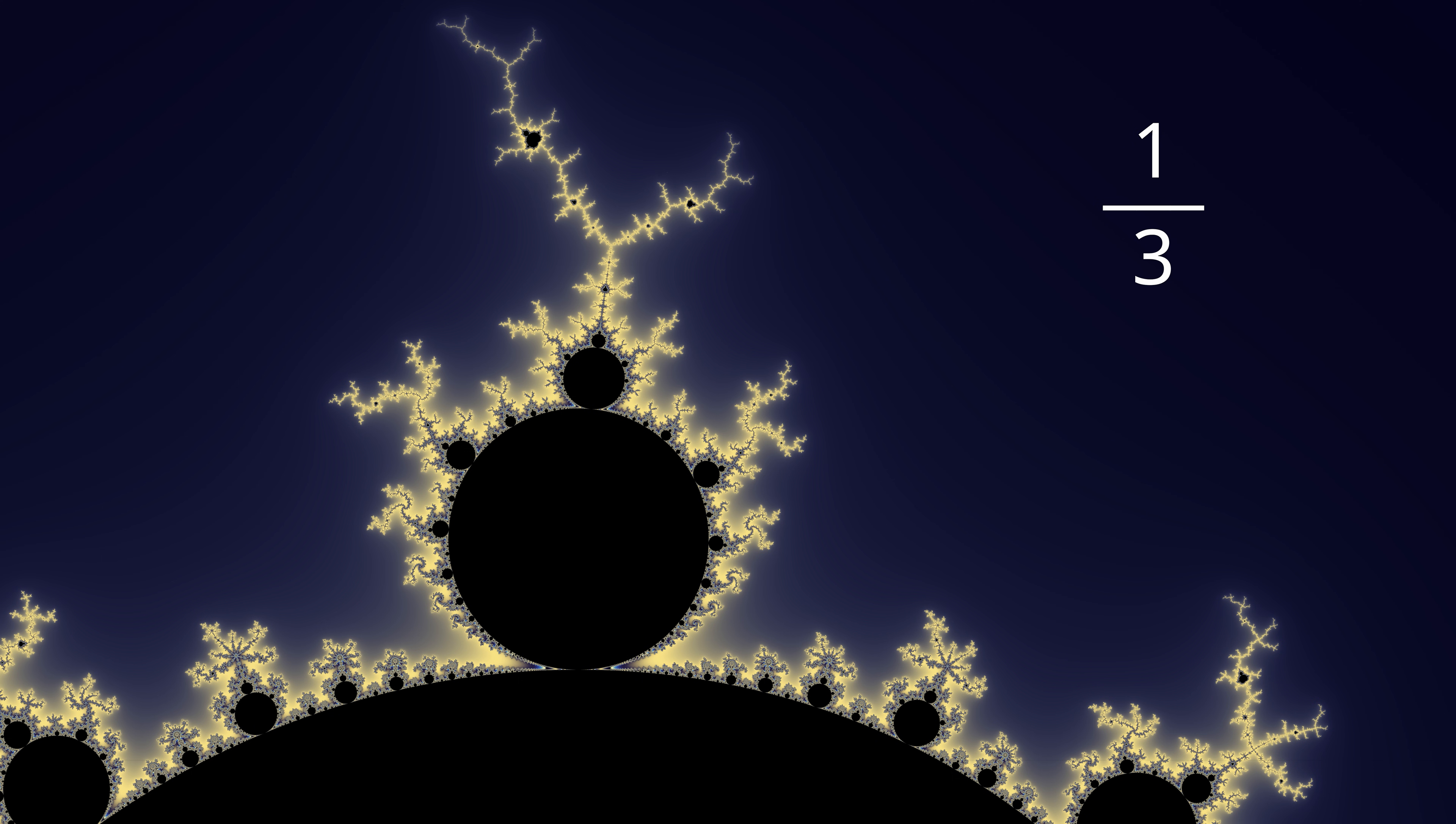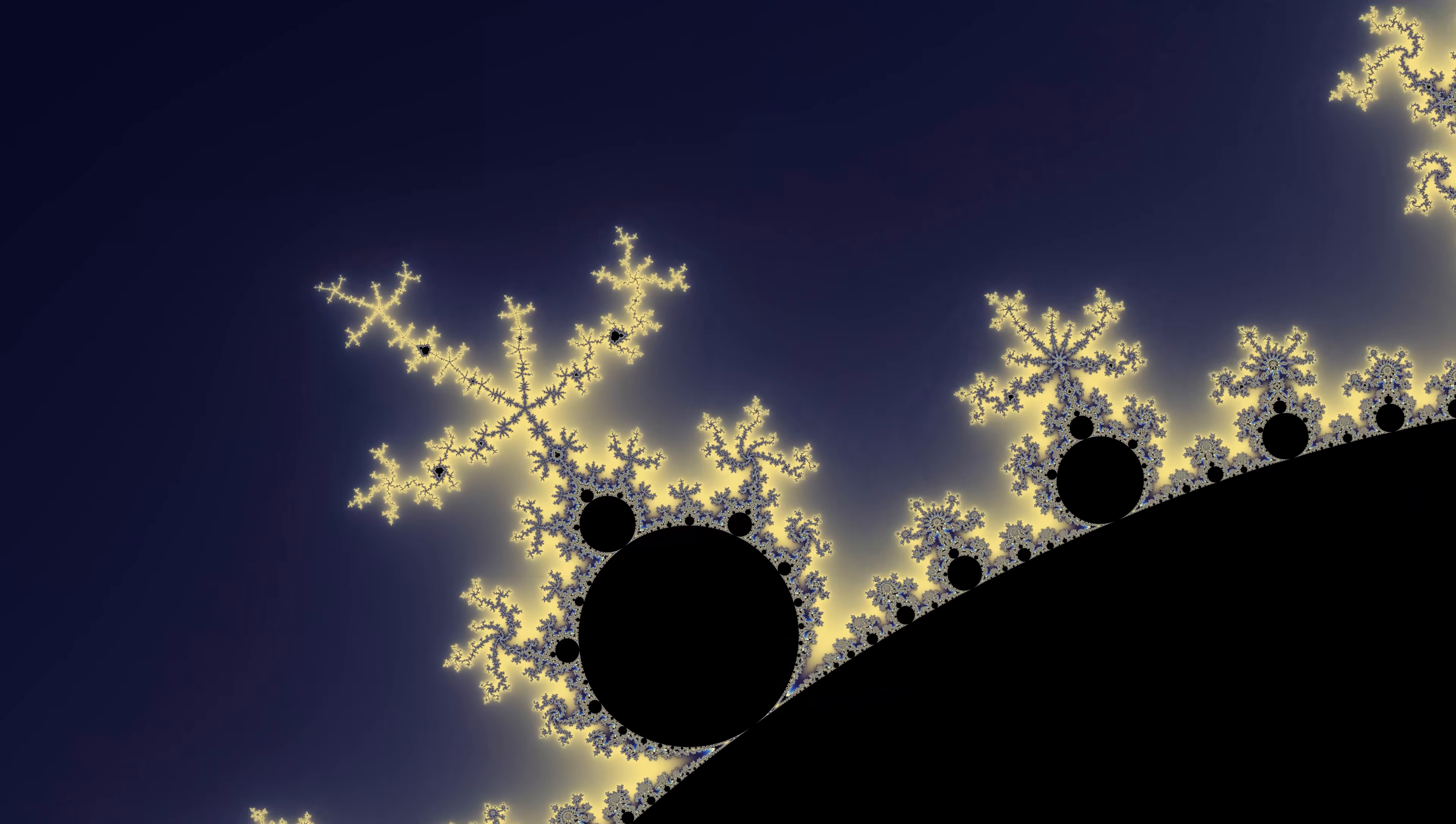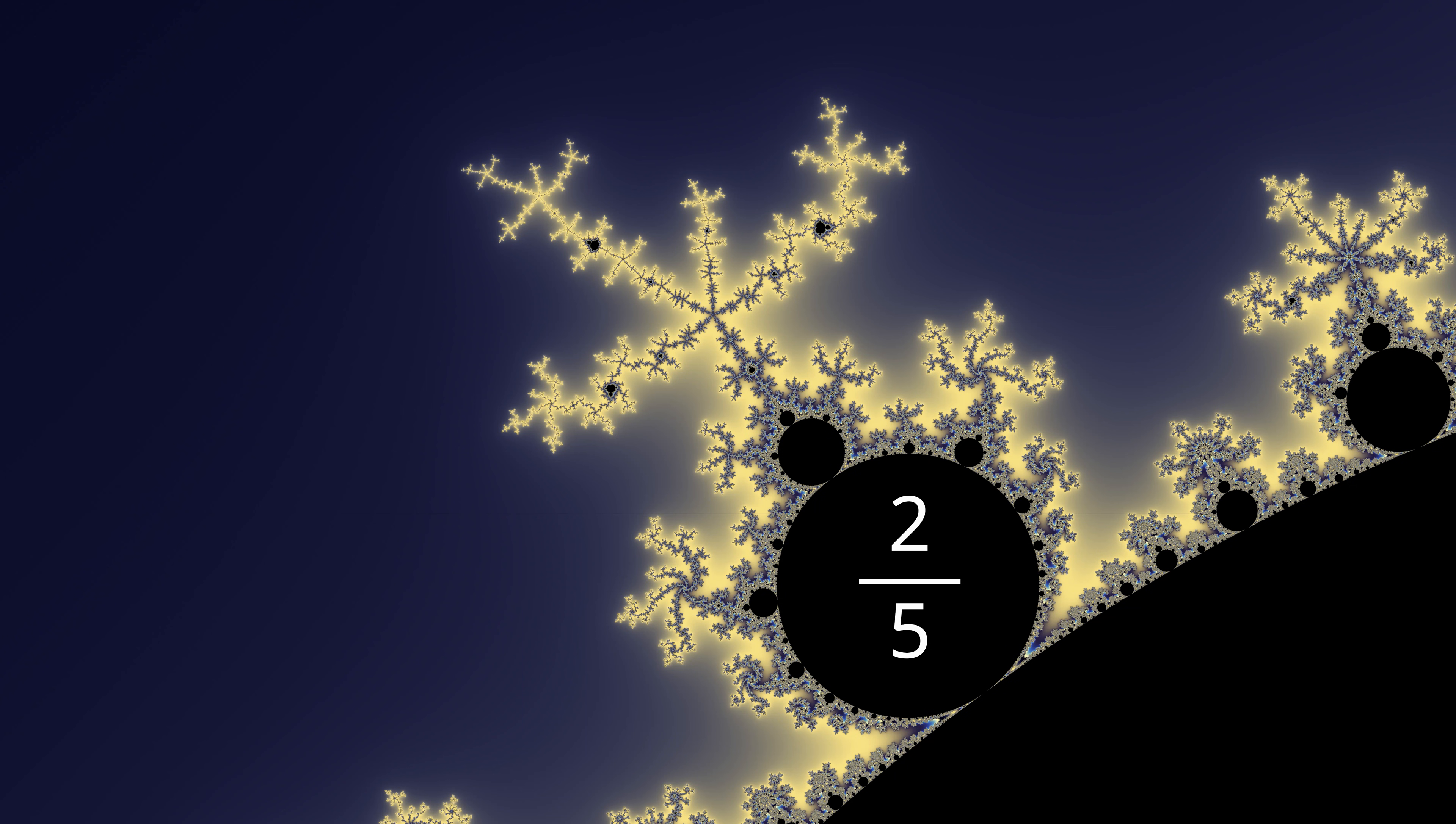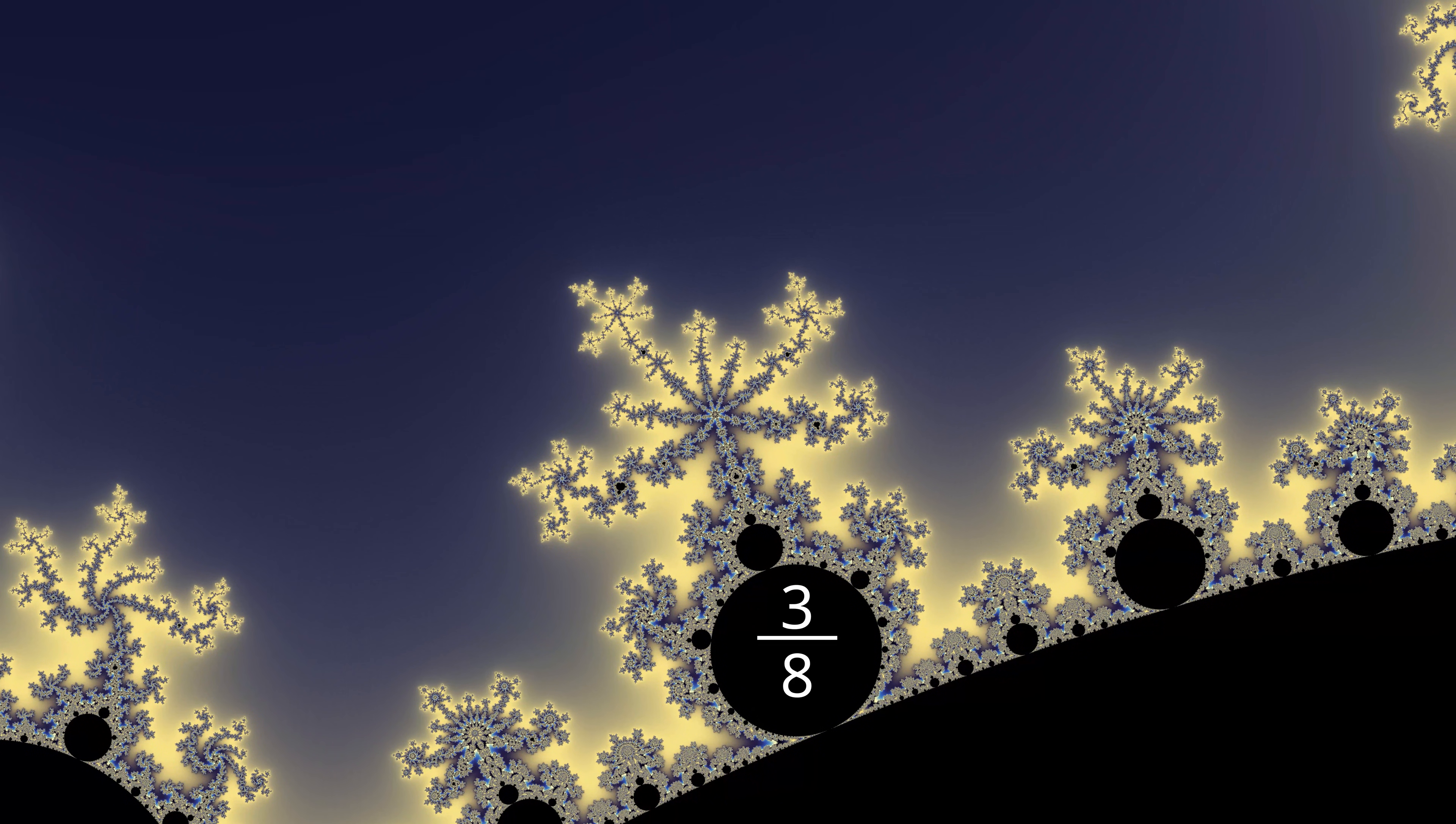This is the period one on three bulb. It has three branches. And number one is the shortest. This bulb is two on five. It has five branches. And number two is the shortest. This bulb is the three on eight bulb.